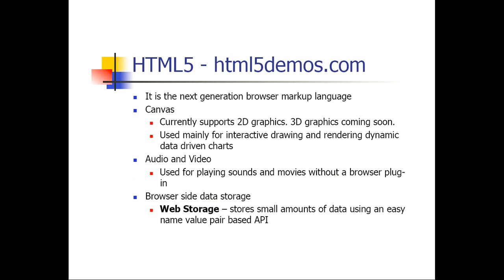HTML5 is the next generation of browser markup language. It currently supports 2D graphics, with 3D graphics coming soon. It's used mainly for interactive drawing and rendering dynamic data-driven charts. Audio and video used for playing sounds and movies without a browser plug-in — that's critical. Even today, if you joined and did not have GoToMeeting already installed, there was a plug-in that had to install just for you to view this webinar. HTML5 is going to eliminate the need for those plug-ins. It also has browser-side data storage: web storage stores small amounts of data using an easy name-value pair-based API. Many applications today, including iPhone or iPad games, use a small amount of web storage to actually store game data.